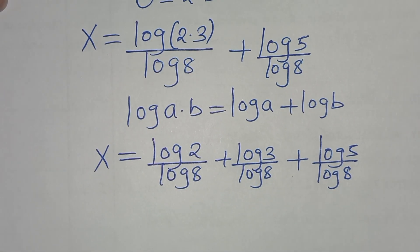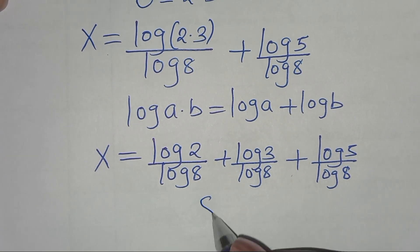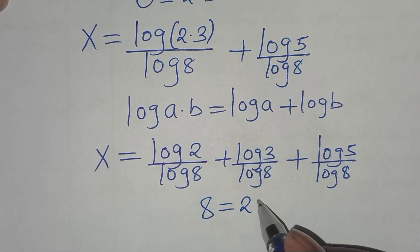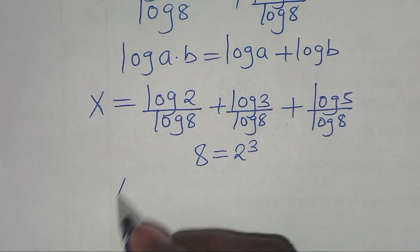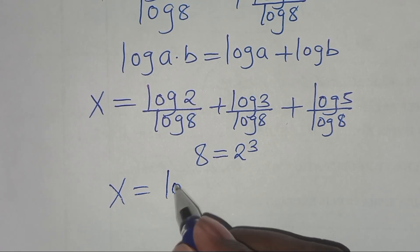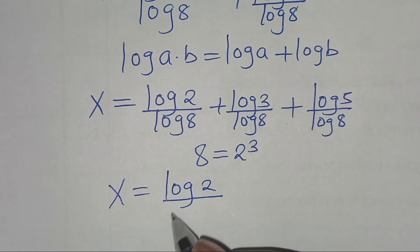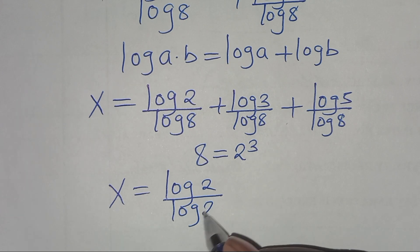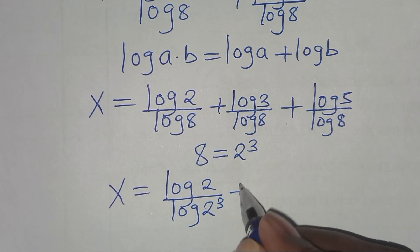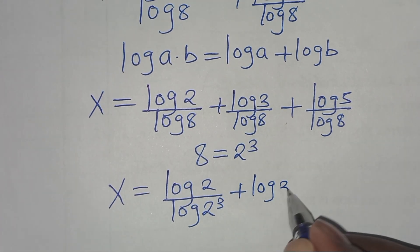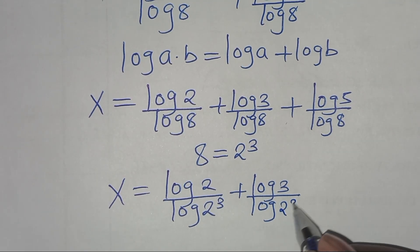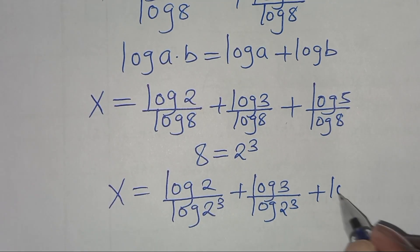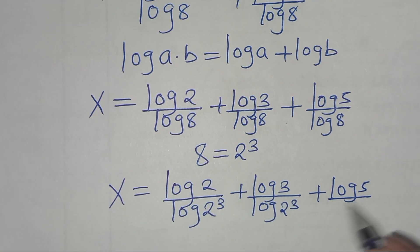Now, the next step is that we can express 8 as 2 to the power 3. So this implies that x is equal to log 2 divided by log(2 to the power 3), then plus log 3 over log(2 to the power 3), plus log 5 divided by log(2 to the power 3).